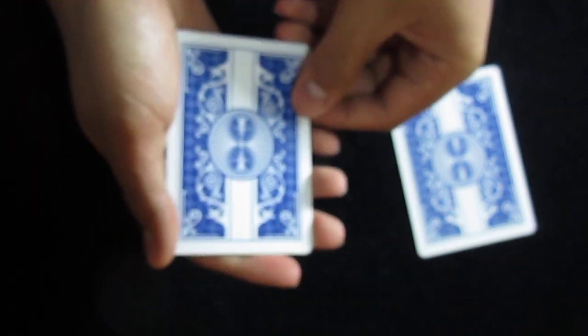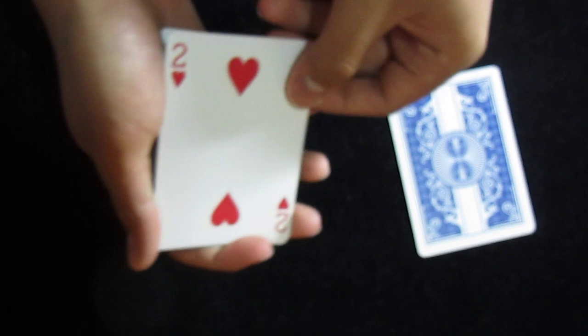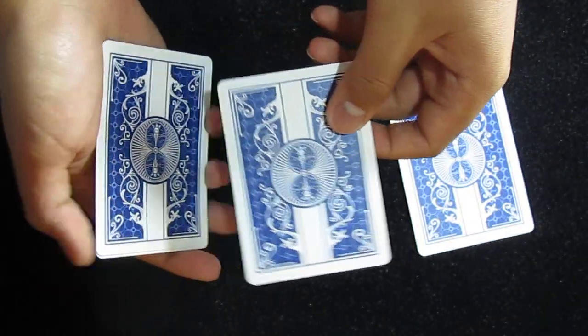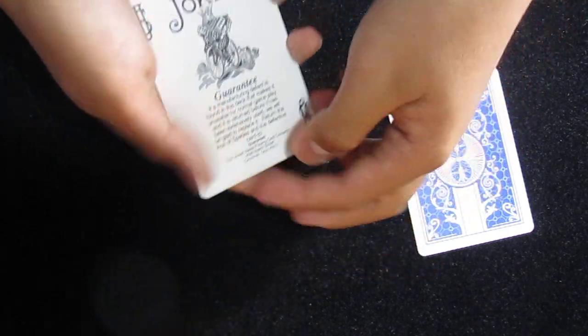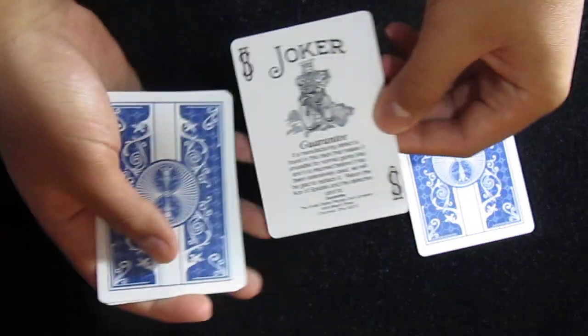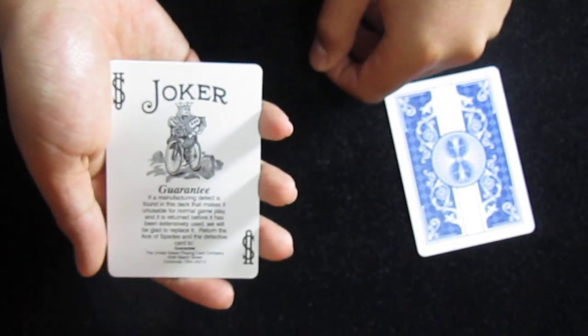Reverse the order once again. And on top should be the two. Okay, I'll sandwich that between the two jokers. Snap my fingers, and it changes into another joker.